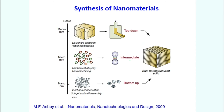Finally we come to the synthesis of nanomaterials. There are two main ways: one is the top-down approach, where you take a bulk material — millimeter or micron size — and break it down into smaller and smaller pieces until you arrive at the nano size. This is like taking chalk and grinding it again and again to get nanoparticles of calcium carbonate.